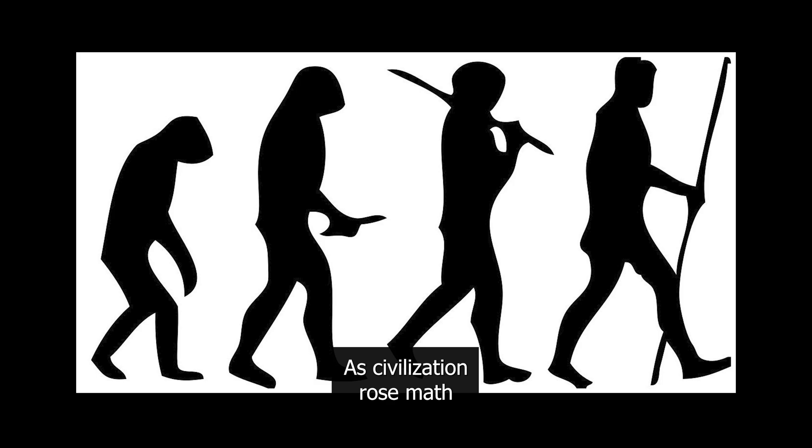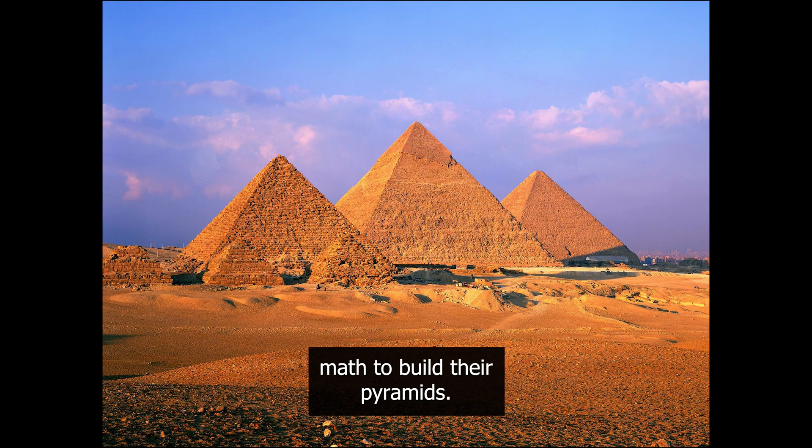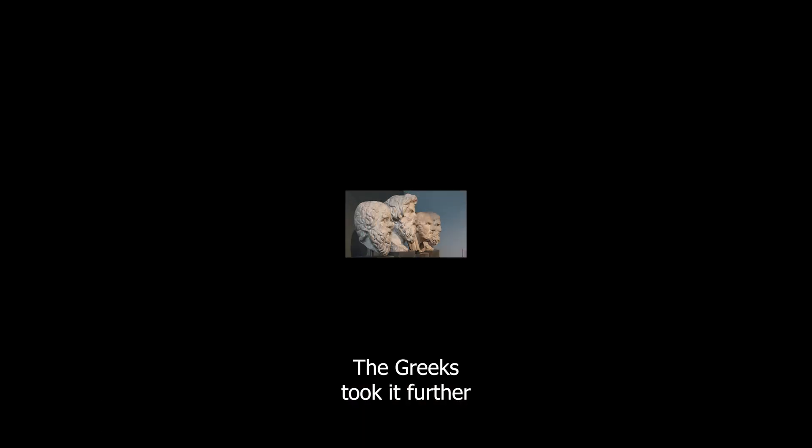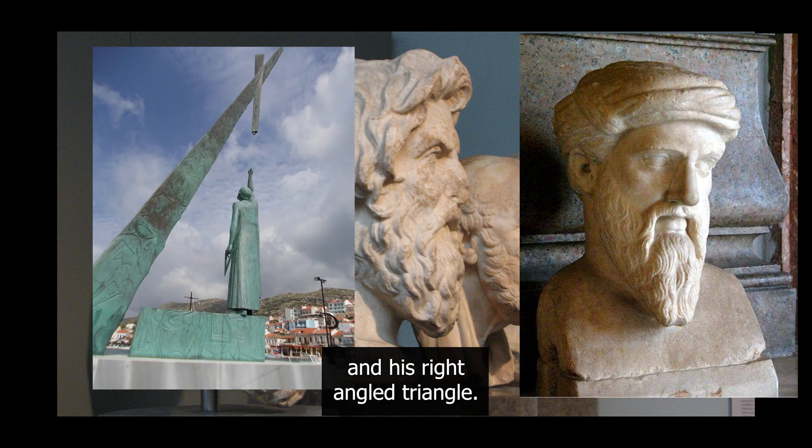As civilization rose, math evolved with it. The Egyptians used math to build their pyramids, creating geometric wonders and yes, large cats. The Greeks took it further with geometry thanks to Pythagoras and his right-angled triangle.